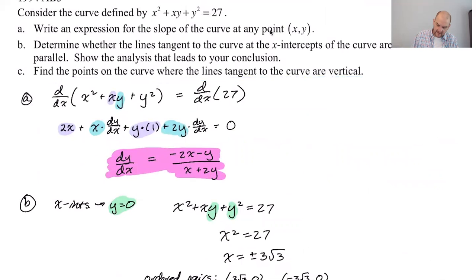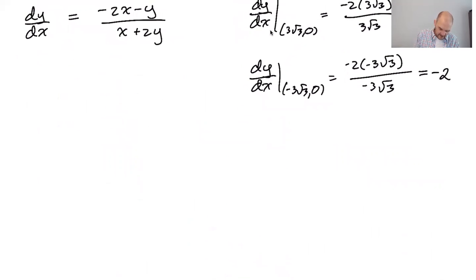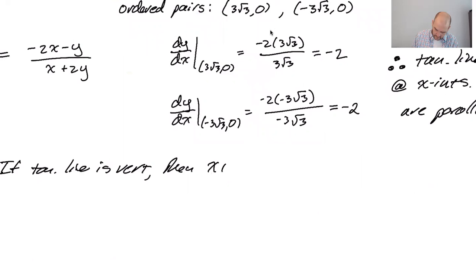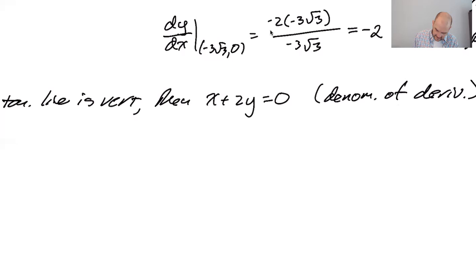Find all the points on the curve where the lines tangent to the curve are vertical. All right, so if you've been doing the videos in order, we keep running into this question. Tangent lines vertical means that the slope of the tangent line is undefined. If the slope of the tangent line is undefined, the denominator of the derivative is equal to zero. So tangent lines vertical means x plus 2y equals zero. I'm going to say if a tangent line is vertical, then x plus 2y equals zero. And why is that? That's the denominator of derivative.